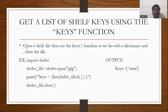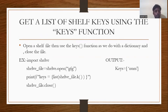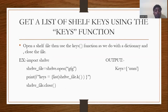Now, getting a list of shelf keys using the keys function. Open a shelf file, then use the keys() function as you do with a dictionary, and close the file. Example: import shelf, then shelf_file = shelf.open('example'). Print the keys: print(f'keys = {list(shelf_file.keys())}'). Then close the file with shelf_file.close(). The output gives: keys = ['numbers'].